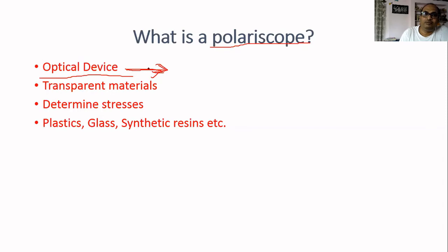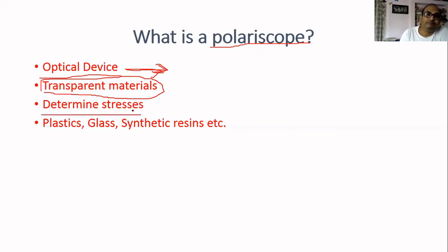Polariscope is an optical device used for transparent materials because we need light to pass through the material. If it is opaque, we will not be able to produce any fringe pattern. It is used for determining stresses and strain — to determine safe load and the extent of strain a material can withstand without structural failure. Materials like plastics, glass, and synthetic resins are used in this photoelasticity process.